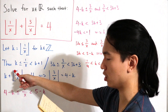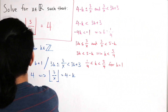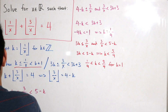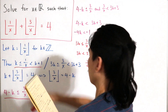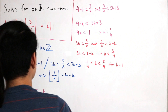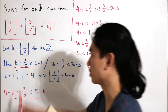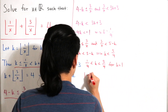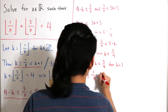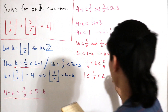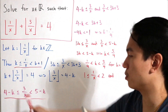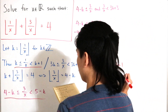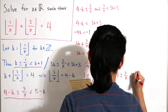Plugging k equals 1 into the first inequality gives 1 less than or equal to 1 over x, strictly less than 2. Plugging k equals 1 into the second inequality gives 4 minus 1 equals 3, so 3 less than or equal to 3 over x, strictly less than 4.